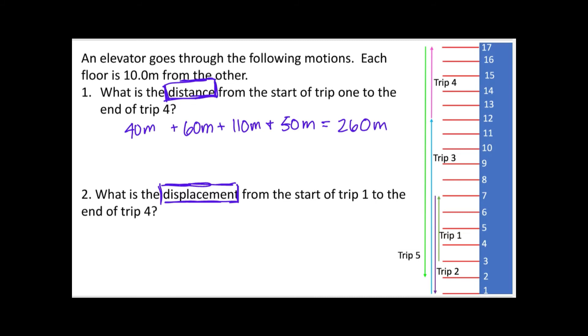Because displacement is how far you are from where you started. And so that's where that's going to really matter. So if we wanted the displacement from the start of trip one, which is here, to the end of trip four, which is here, we're going to want this distance, right? So I can just kind of count these spots: 1, 2, 3, 4, 5, 6, 7, 8, 9, 10, 11, 12, 13, 14. Does that make sense? The start of trip one to the end of trip four. Yeah, so that would be like 140 meters.